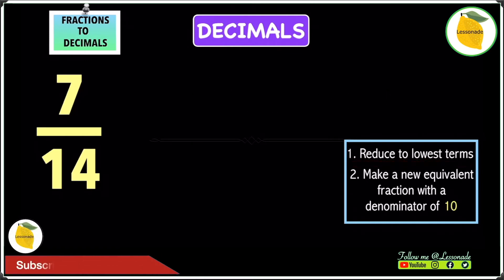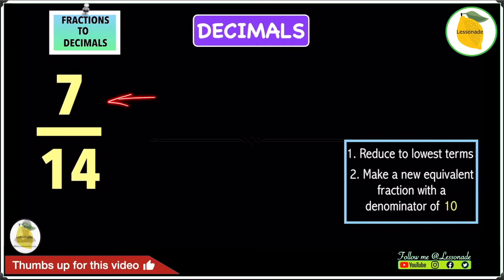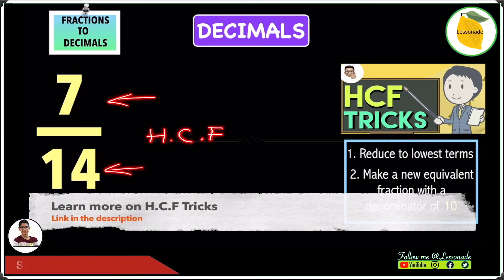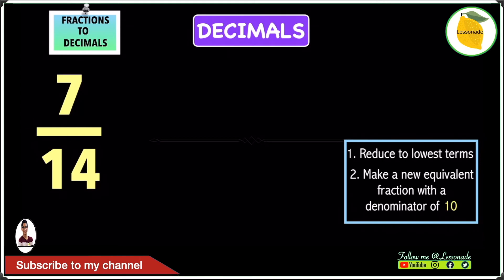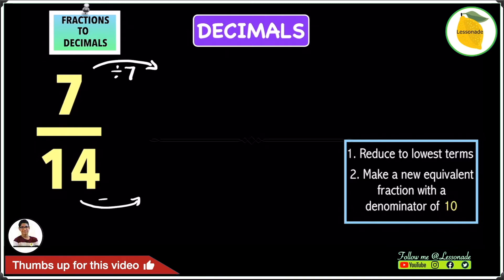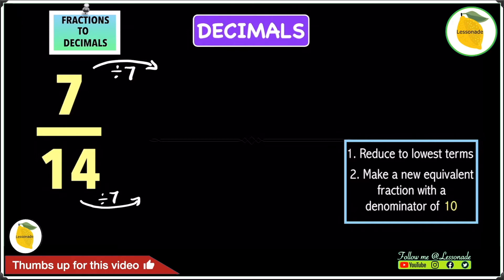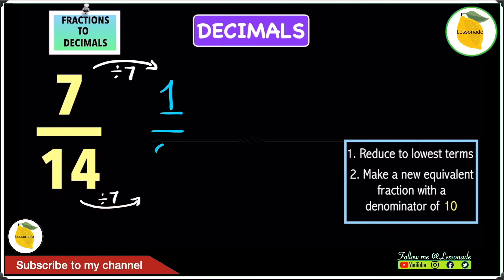First we have to reduce to the lowest terms. To reduce 7 over 14 to the lowest terms we have to find the highest common factor for both the numerator and the denominator. The highest common factor for both 7 and 14 is 7. So divide the numerator by 7 and also the denominator by 7. 7 divided by 7 gives you 1, and 14 divided by 7 gives you 2. So we have 1 over 2.